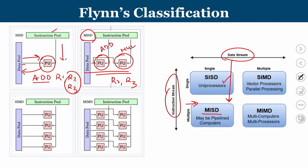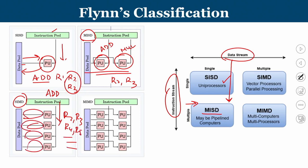Next is SIMD — single instruction, multiple data stream. I want to perform only an add operation, but it can be done on R2 and R3, or on R4 and R5 — different combinations of data, but the same instruction. Single instruction and multiple data stream is called SIMD. Your vector processors, parallel processors, and GPUs sometimes belong to this broader category where the same operation is performed on multiple different kinds of data.